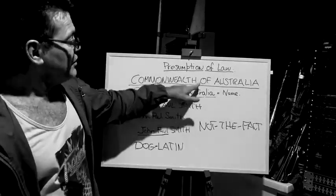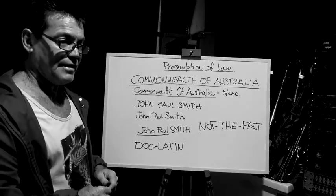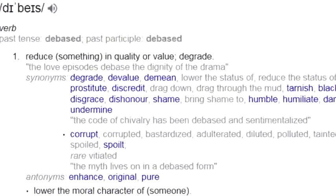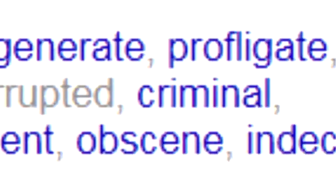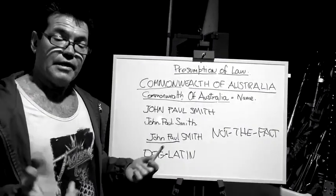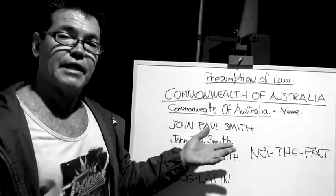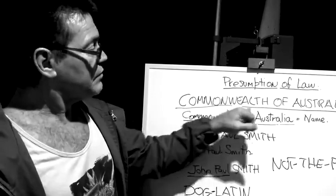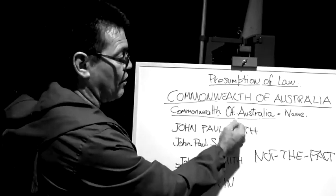But it does create the presumption of law — not the fact. It creates the presumption. So when you see this type of all-uppercase text without the hyphens in between it, you're looking at a debased, dog Latin text legally, or a debased text under Webster's English Dictionary, which is really a crime — criminal and immoral. And that is the key. When you read this stuff, you read Commonwealth of Australia and assume it's Commonwealth of Australia, but in actual fact it's not.